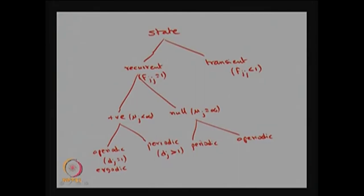You can easily visualize transient versus recurrent in the state transition diagram of any discrete time Markov chain. However, from diagrams alone you cannot conclude whether a state is positive recurrent or null recurrent — you must evaluate μj = Σ n · fjj(n). Based on whether that summation is finite or infinite, you can conclude whether the recurrent state is positive recurrent or null recurrent.